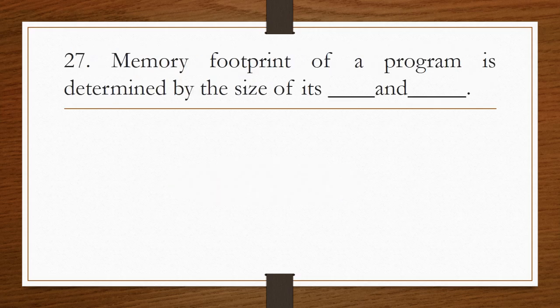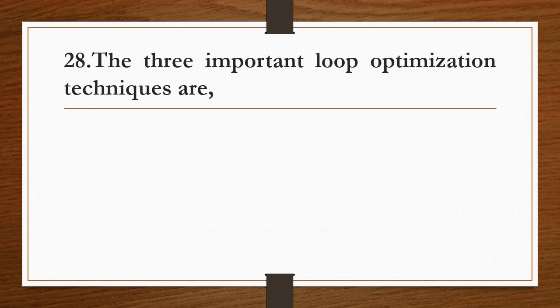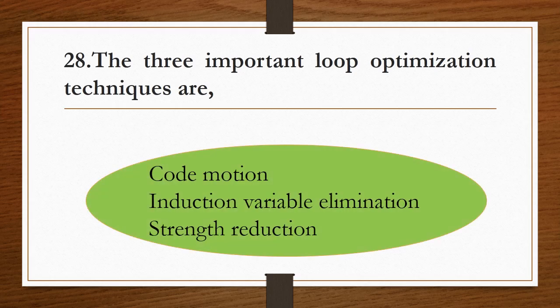The memory footprint of a program is determined by the size of its data and instructions. The three important loop optimization techniques are code motion, induction variable elimination, and strength reduction.